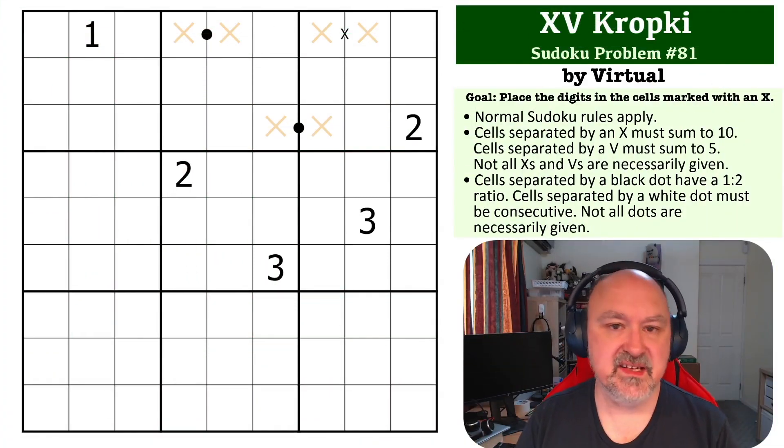Hey this is Bremster and this is number 81 in the Sudoku problem series. This is an XV Kropki problem by Virtual.